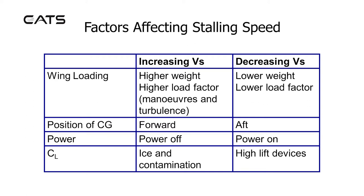Factors affecting stalling speed. Factors which increase VS with regard to wing loading are: a higher weight, a higher load factor, manoeuvres and turbulence. The position of centre of gravity — if forward — will increase VS. VS will increase with power off. CL will be decreased with ice and contamination on the wing surfaces. Conversely, decreased stalling speed occurs with lower weights and load factors, an aft CG, power on, and the use of high lift devices.